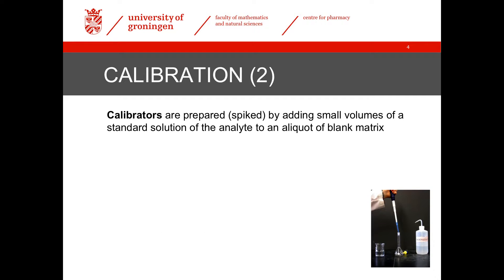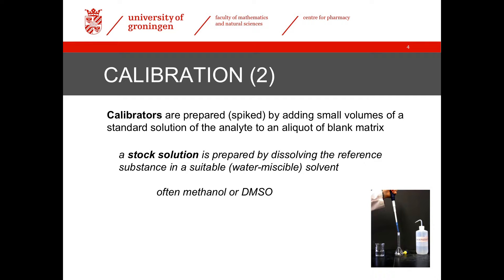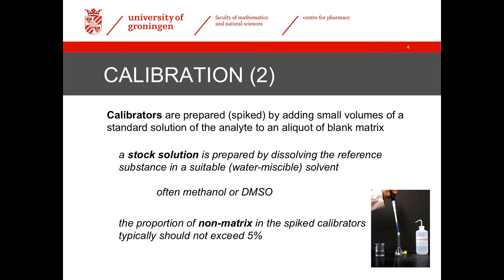The process of preparing a calibrator is called spiking, and we do this by adding a small volume of a solution of the analyte to an aliquot of the blank matrix. For small molecules, the reference substance typically is a powder, which we first need to dissolve in a suitable solvent to make a stock solution — that's often methanol or DMSO. To make sure that the composition of the spiked sample does not differ too much from a study sample, the amount of spiking solution is typically restricted to below 5% of the final sample volume.